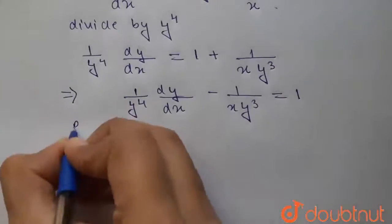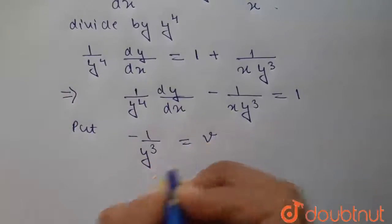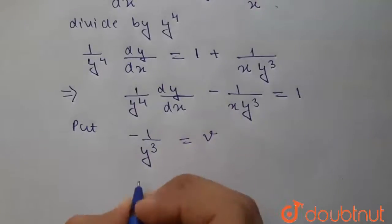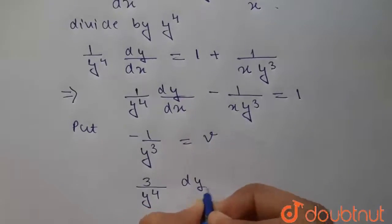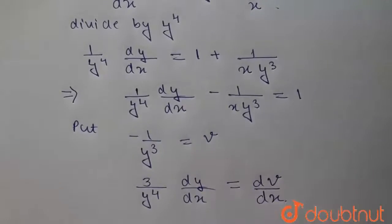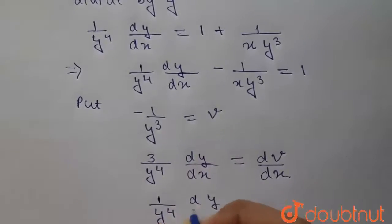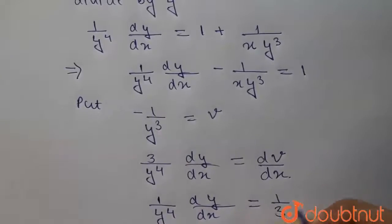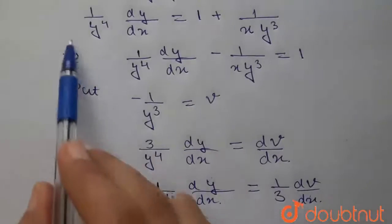Now we put minus 1 upon y cubed equal to v and differentiate with respect to x. We get 3 y to the power 4 times dy by dx equals dv by dx. From here, 1 upon y to the power 4 dy by dx equals 1 by 3 dv by dx. We will substitute this value into the equation.